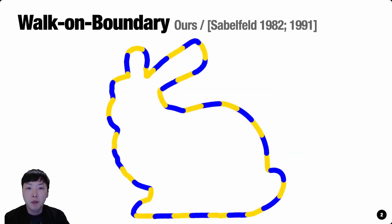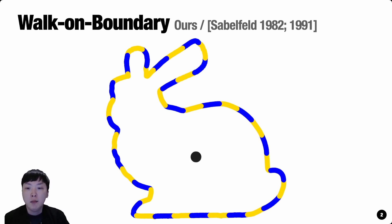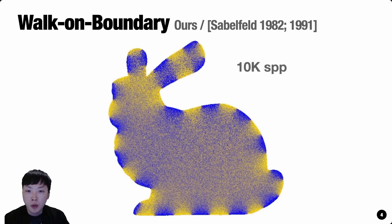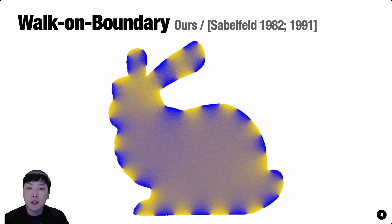The Walk-On Boundary Method is a Monte Carlo method for partial differential equations such as the Laplace equation. It was originally developed by Sabelfeld in 1982, and we are the first to introduce it to computer graphics. To estimate the solution, just like MC ray tracing for rendering, we sample many different paths stochastically and compute their average contributions. We get a noisy estimate first, and then the noise clears away as we spend more time generating more samples.